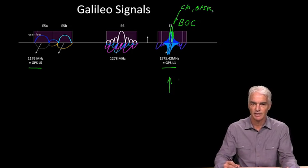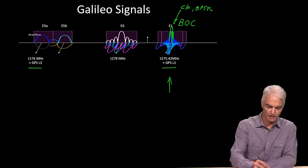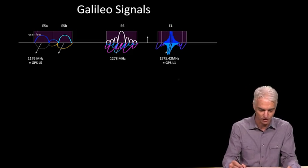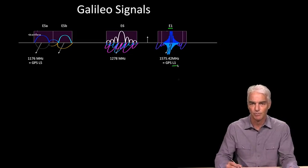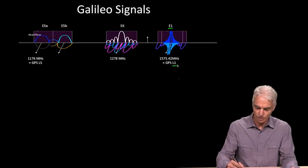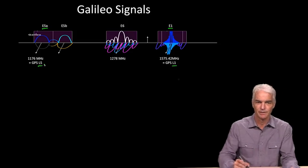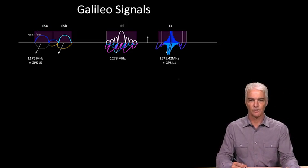Galileo is designed like that to avoid interfering with the GPS C/A code. Then they have another signal on L5. As well, there's another signal in the middle called E6. You'll notice there's this terminology - we've got E1 instead of L1, just like with Beidou it was called B1. But in terms of the frequency, E1 is the same thing as L1, and E5A is the same thing as L5, just for the different system.